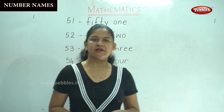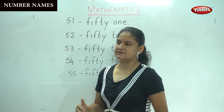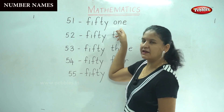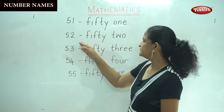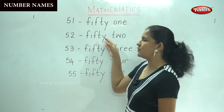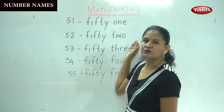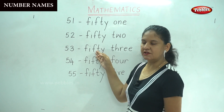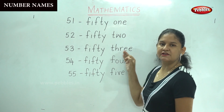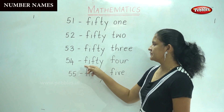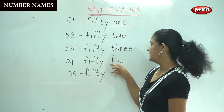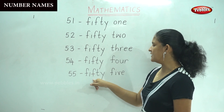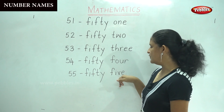So shall we say the number names together? Yes. 51: F-I-F-T-Y, fifty. O-N-E, one. 51. 52: F-I-F-T-Y, fifty. T-W-O, two. 52. 53: F-I-F-T-Y, fifty. T-H-R-E-E, three. 53. 54: F-I-F-T-Y, fifty. F-O-U-R, four. 54. 55: F-I-F-T-Y, fifty. F-I-V-E, five. 55.